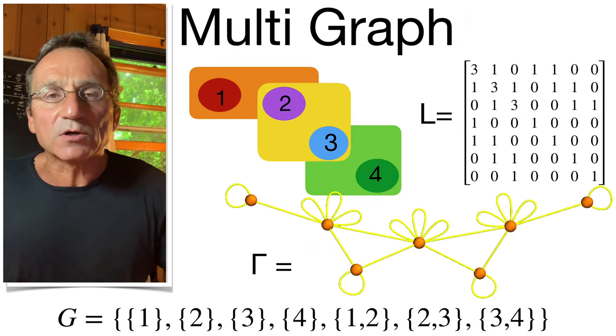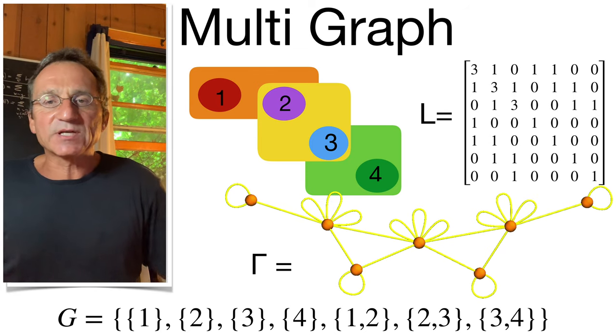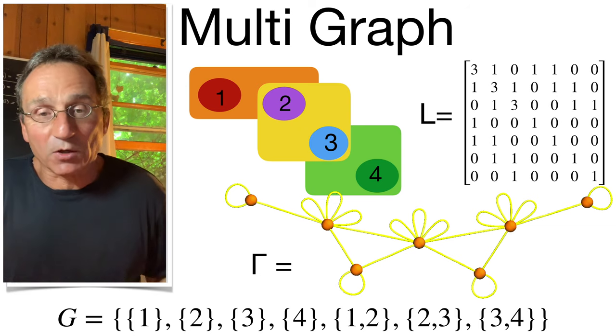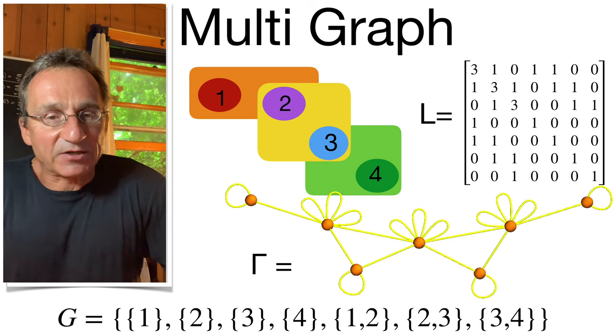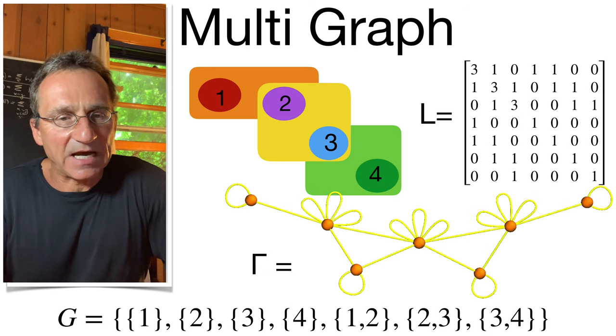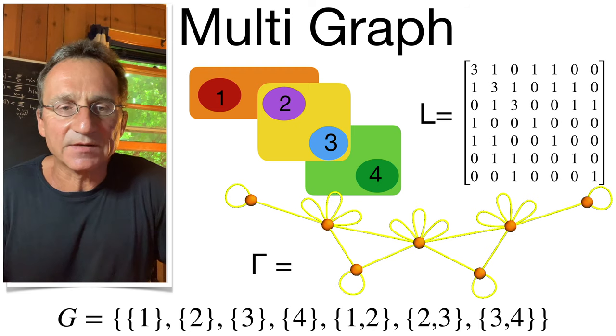It defines also a graph. We can look at the quadratic form as an adjacency matrix of a multigraph gamma. This graph can have loops, actually always has loops and multiple connections. We see that here it's a graph with seven nodes because we have seven sets.